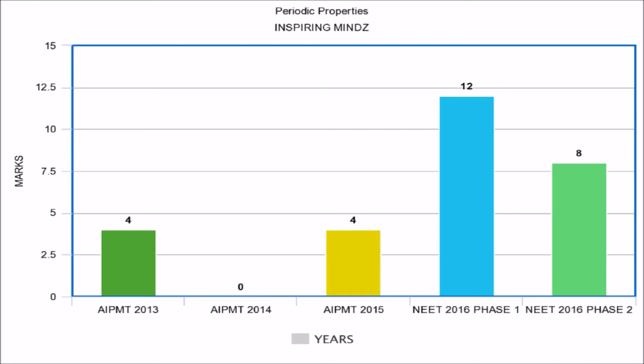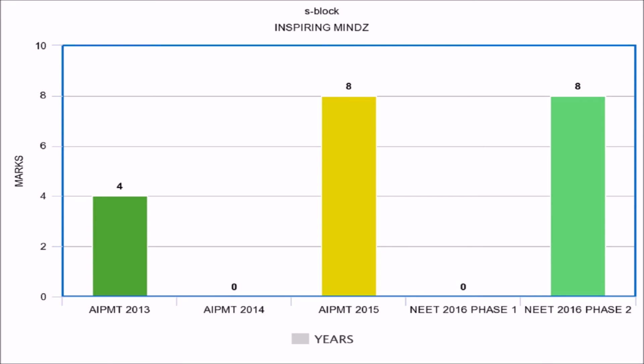Now let's look at periodic property. In AIPMT 2013 the weightage was 4 marks, which reduced to 0 marks in AIPMT 2014 — no questions were asked that year. In AIPMT 2015, 4 marks of questions were asked. In NEET 2016 Phase 1, 12 marks of questions were asked, and in NEET 2016 Phase 2 the weightage was 8 marks.